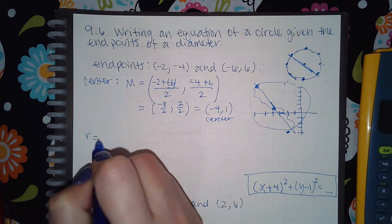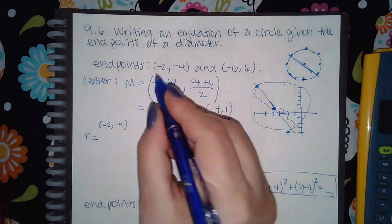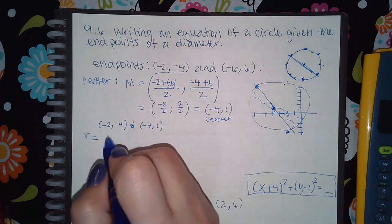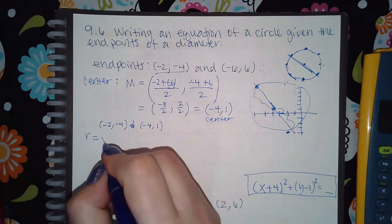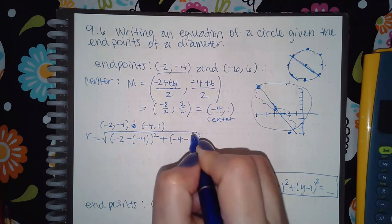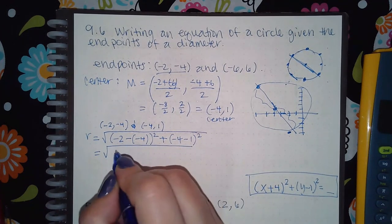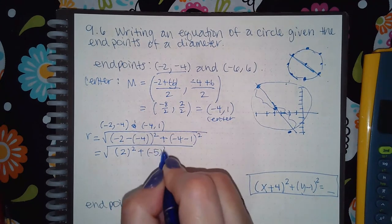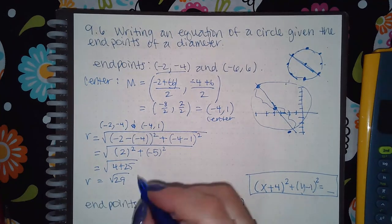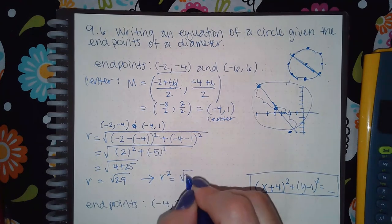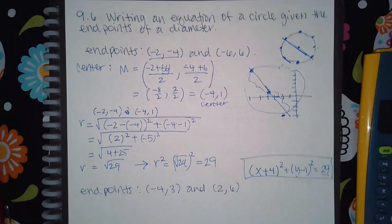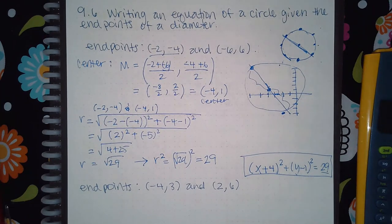I'm going to use the first point, negative two, negative four, and the center, negative four, one. You have to use the center to figure out the radius. Using the distance formula: square root of (x₁ − x₂)² + (y₁ − y₂)². That becomes (negative two minus negative four)² plus (negative four minus one)², which is 2² plus (negative 5)² — that's 4 plus 25, giving me the square root of 29. So r equals the square root of 29, and r² equals 29.